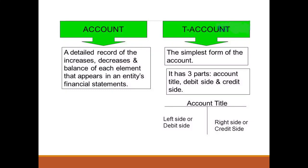In an actual accounting system, a more formal account form replaces the T-account. Later in this chapter, a four-column account is illustrated. The T-account, however, is a simple way to illustrate the effects of transactions on accounts and financial statements. For this reason, T-accounts are often used in business to explain transactions.